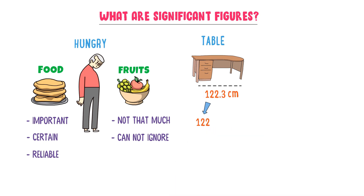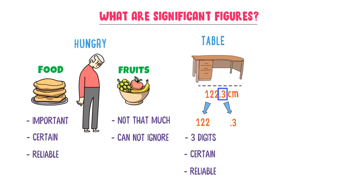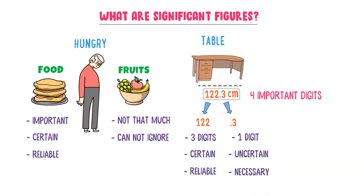We know that 122 is a three-digit number. We are certain about them — the length of the table is 122 cm — and it is a reliable number. On the other hand, take the decimal part, 0.3. We know that it is a one-digit number, and we say that it is uncertain — not that much important to be included, but it is necessary, like fruits, to be indicated. Thus, we say that there are four important digits present in this measurement.